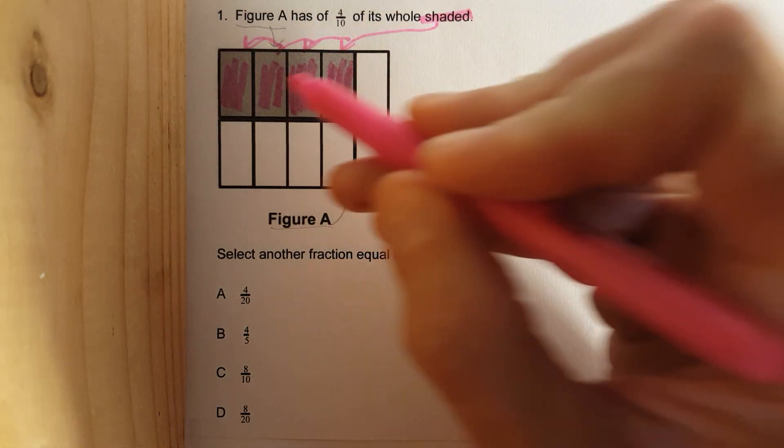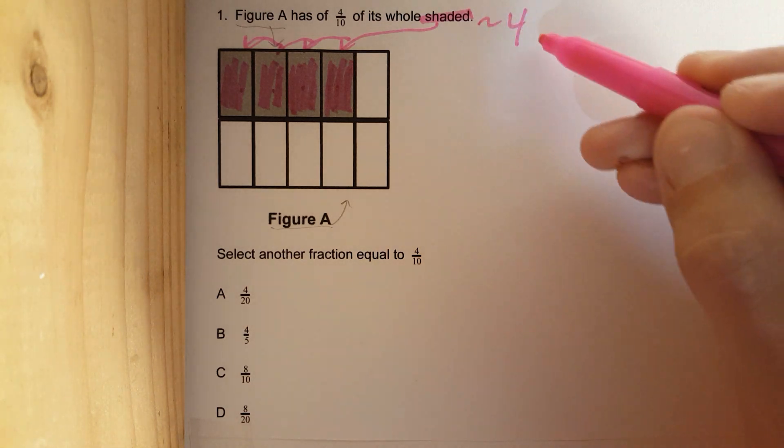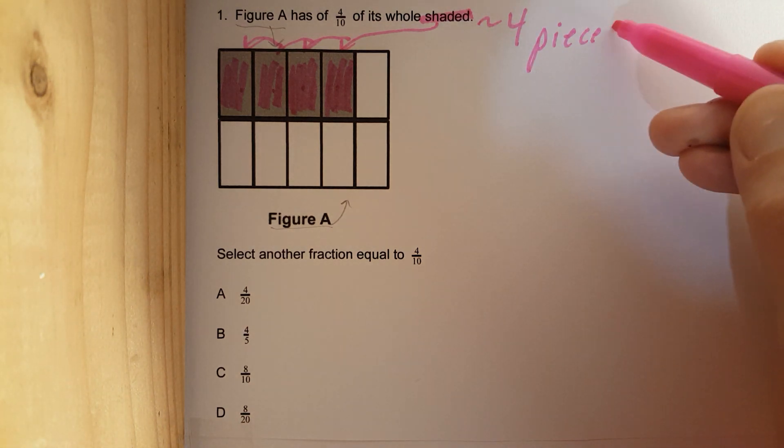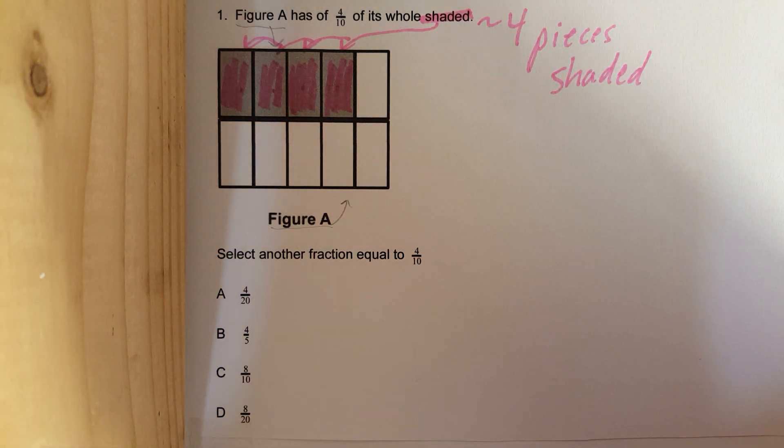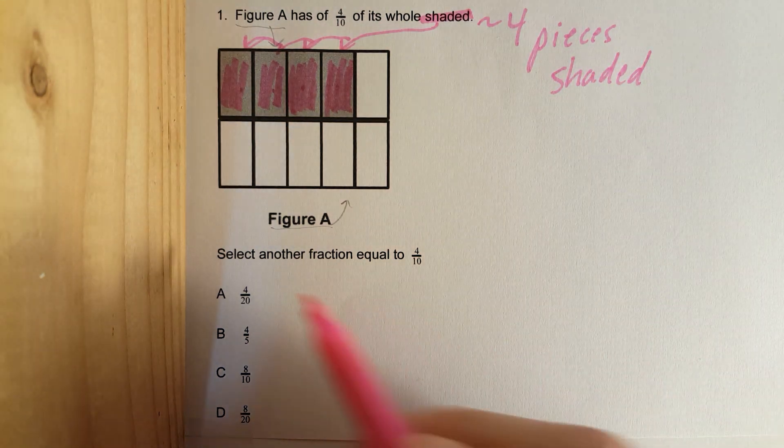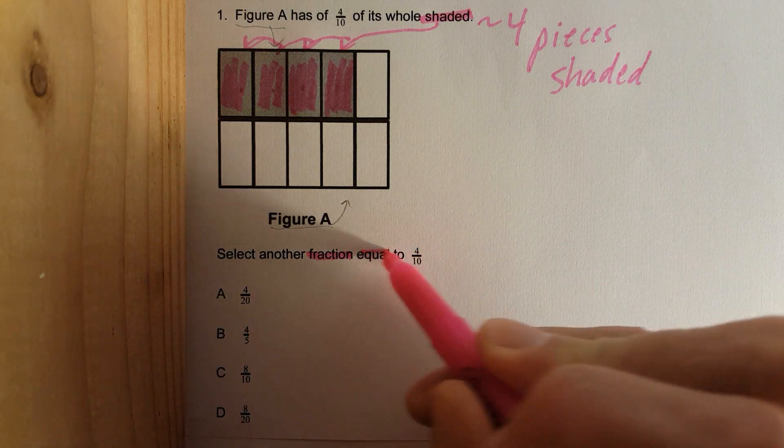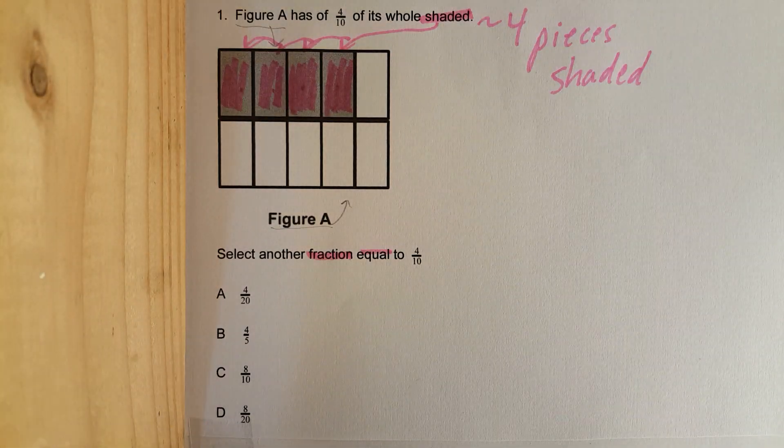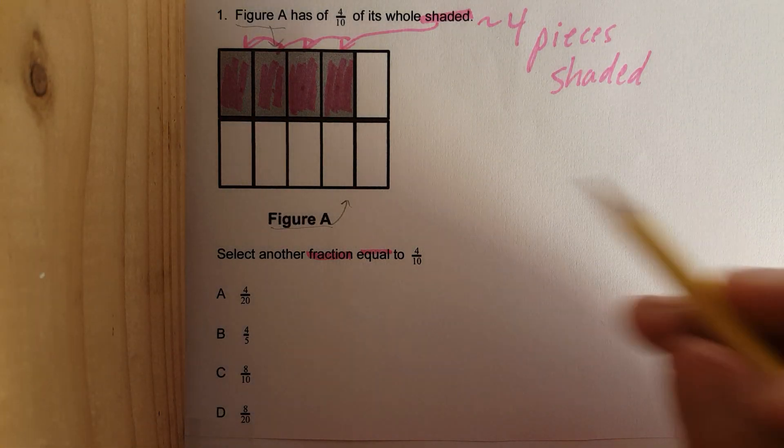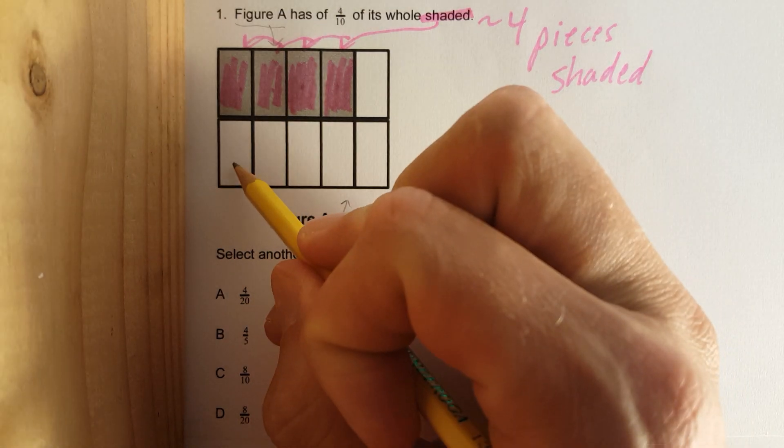these are the shaded pieces. Notice how there is 1, 2, 3, 4. 4 pieces. Shaded. Okay? Select another fraction equal to 4 over 10. Okay. Let's tear this up. First off, watch this.